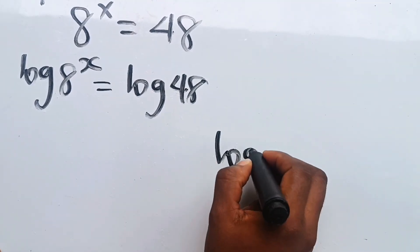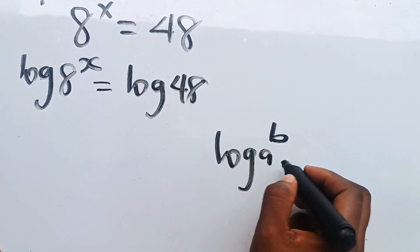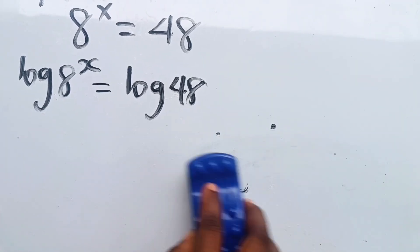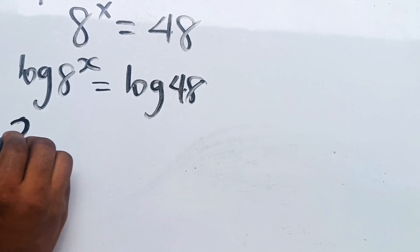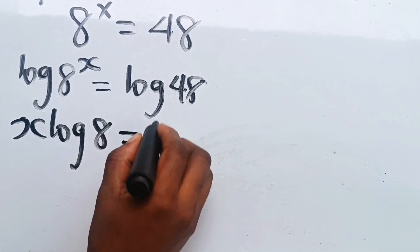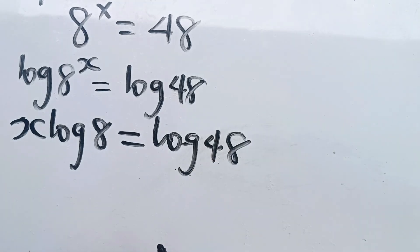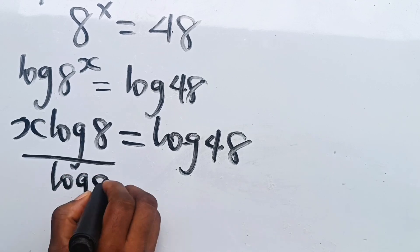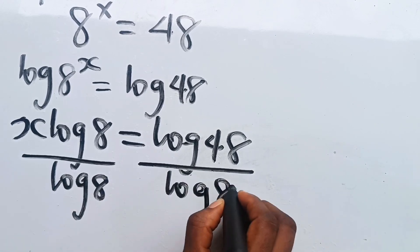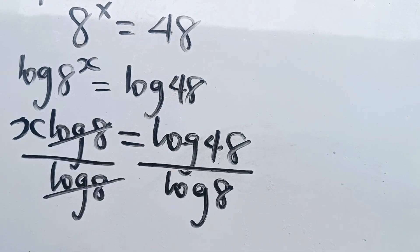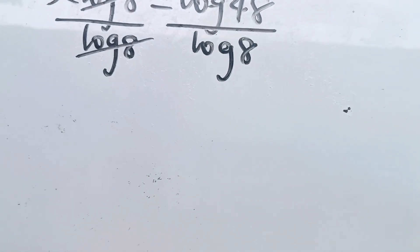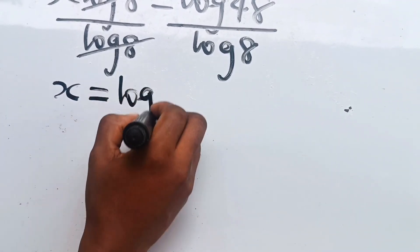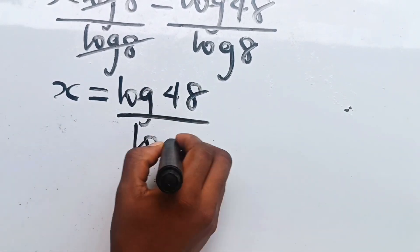When you have log a to the power of b, this is equal to b multiplied by log a. So that simply means we can write this as: x multiplied by log 8 is equal to log 48. Now at this point, let's divide both sides of the equation by log 8, so that x is equal to log 48 divided by log 8.